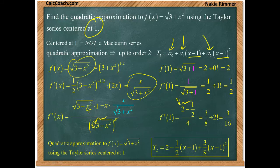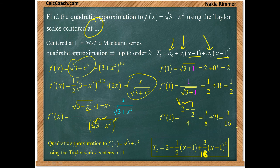is t2 that's equal to 2 plus one half times the quantity of x minus 1 plus 3 sixteenths times the quantity of x minus 1 squared. And that's our final answer.